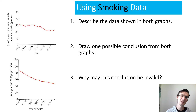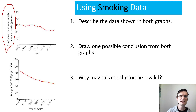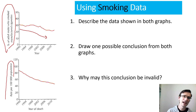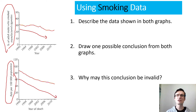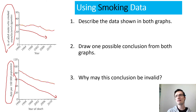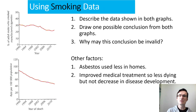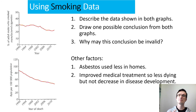Looking at data showing the percentage of males who smoke and early death rates from 1990 to 2010: both numbers have decreased, and you might link fewer smokers to fewer premature deaths. However, we must be cautious — other factors could be involved. For instance, asbestos has been identified and removed from homes since the 1990s, and improved medical treatment could mean the same number of people are getting cancer but fewer are dying because of better treatment.